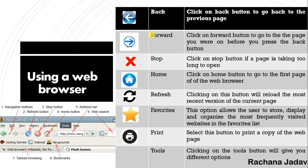Using a web browser — here you can see many things. There is the Back button: if you want to go back to the previous page, you can click Back. There is also a Forward button: if you went back and want to go to the next page you had opened, click Forward. Stop: if a page is taking too long to load, you can stop it.